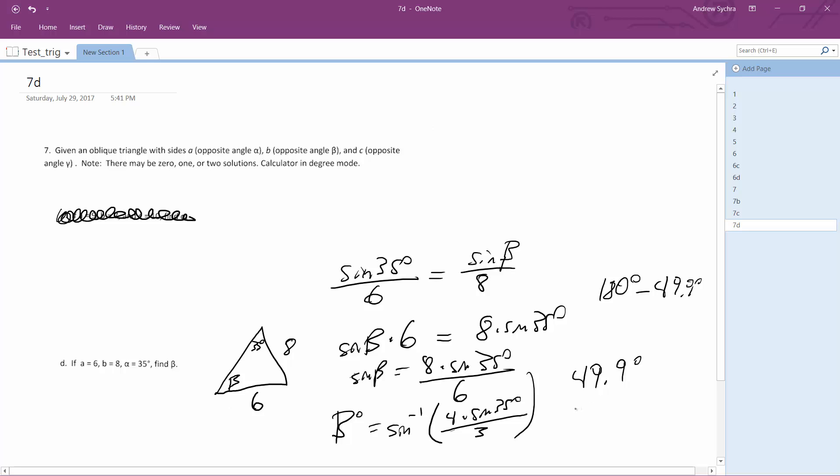so we end up with 130.1 degrees. So there are two triangles for this, and we wanted to find angle beta, so 49.9 and 130.1 are the solutions.